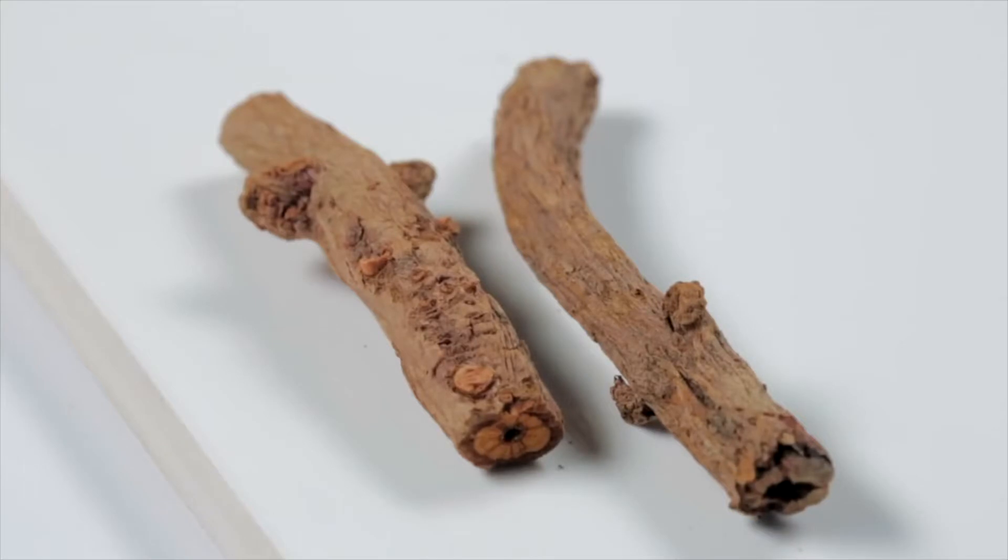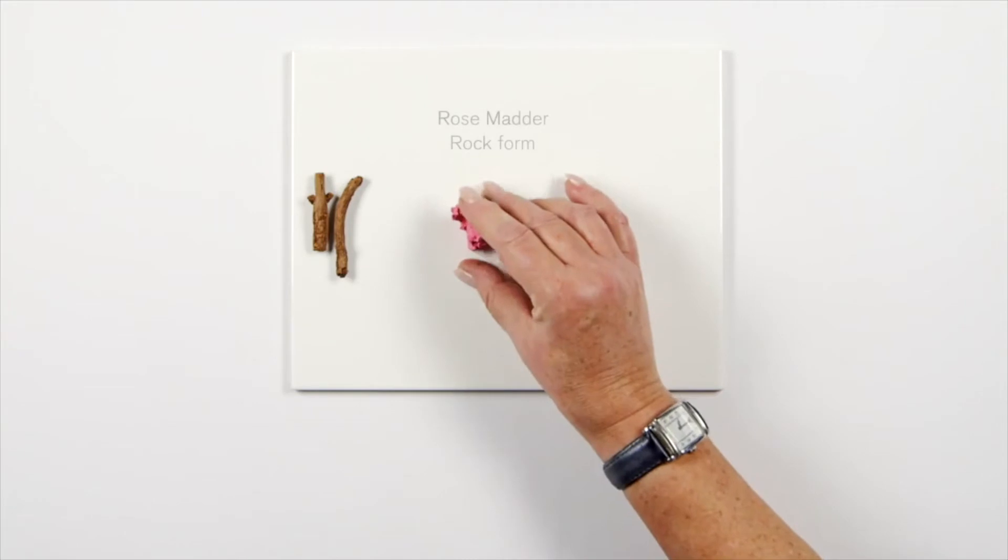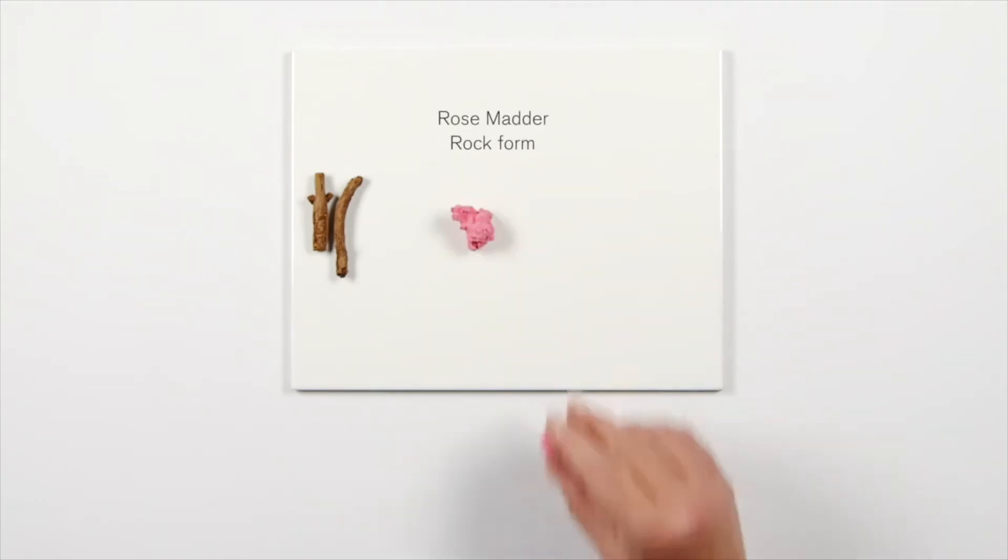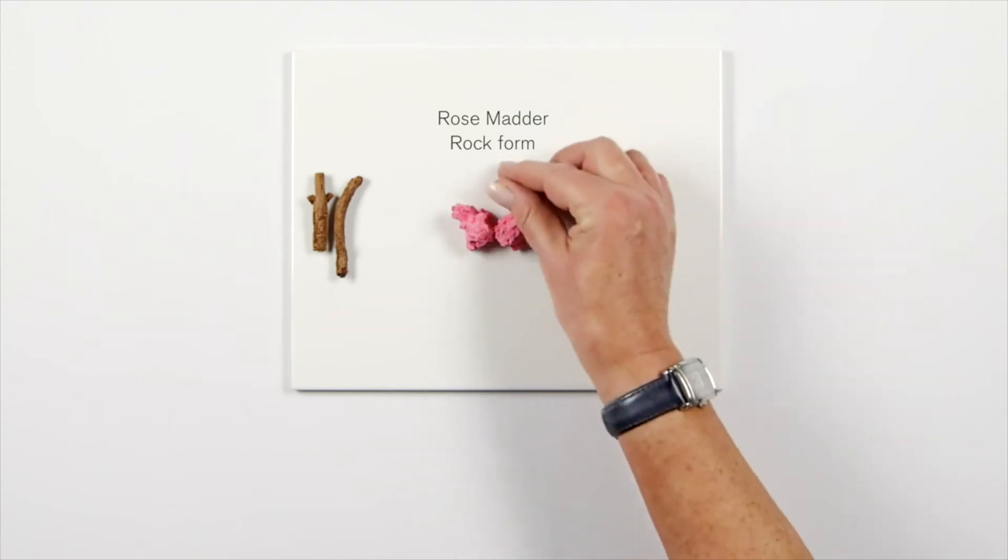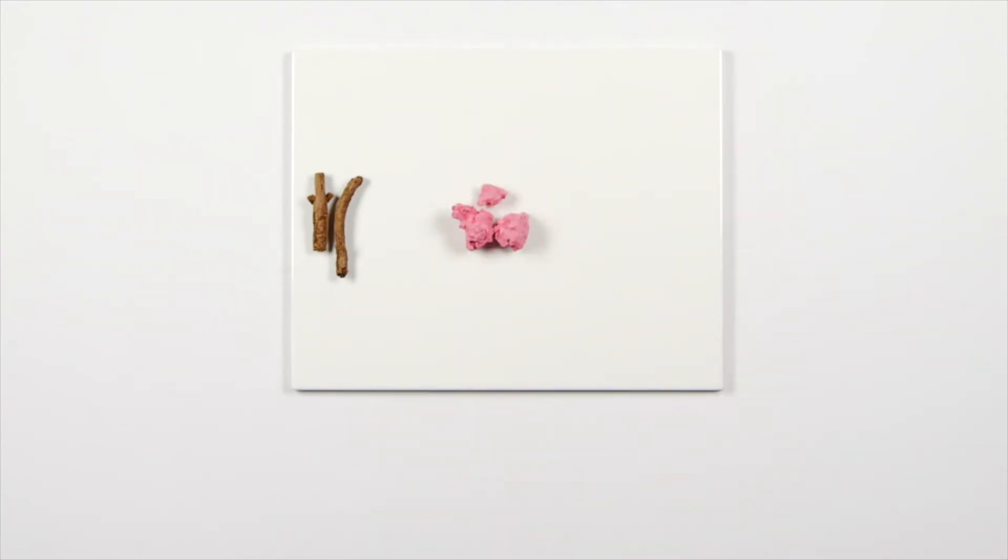The raw material for this beautiful pigment is madder root. The dye extracted from this root is soluble in water, so there's a need to bring together or fix this dye with an insoluble substance or base.